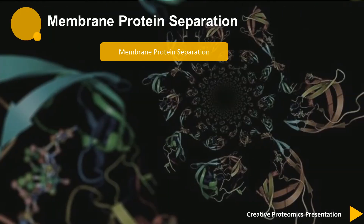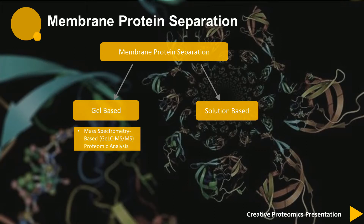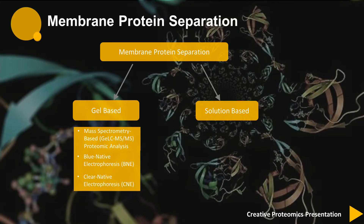Membrane protein separation is often divided into gel-based separation and solution-based separation. An earlier gel-based separation is SDS-PAGE prior to mass spectrometry, now known as mass spectrometry-based proteomic analysis. In this approach, the gel is cut into slices and digested with trypsin, and the peptides are extracted from gel slices and analyzed by tandem mass spectrometry. There are other gel-based separation methods, such as blue-native electrophoresis, clear-native electrophoresis, and high-resolution clear-native electrophoresis.